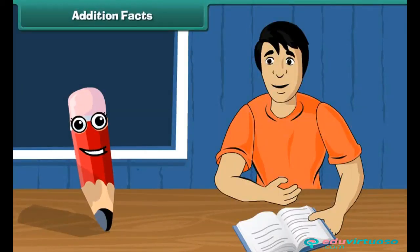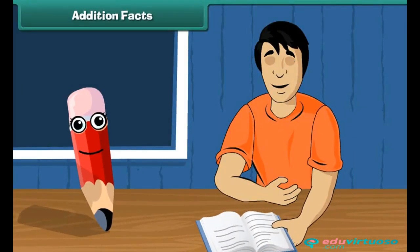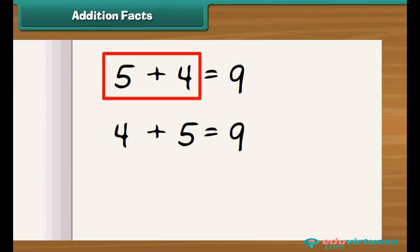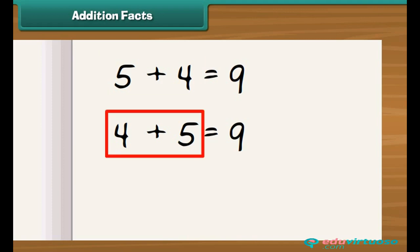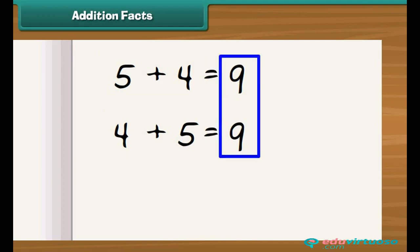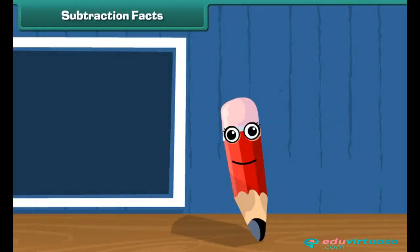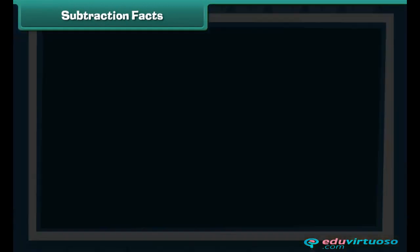Show me your notebook. You know that the sum of five and four is nine, and if we add four to five we again get a sum of nine. Whether you add five to four or four to five, their sum will always be the same. This is known as an addition fact.